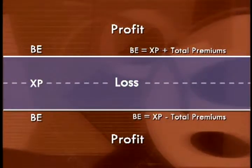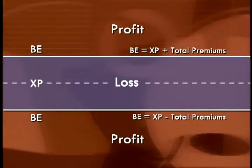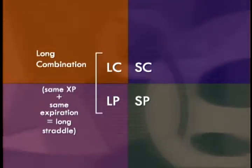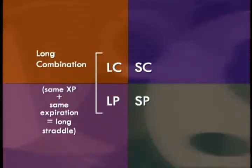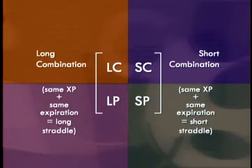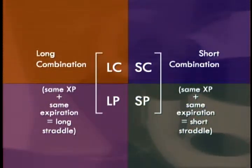Recall that long combinations and long straddles consist of a long call and a long put on the same stock, with the straddle also having the same strike price and expiration date. Now we'll look at another multiple option position — essentially the opposite of a long combination — consisting of a short call and a short put on the same stock. This would be called a short combination. If the options also had the same strike prices and expiration dates, it would be a short straddle.